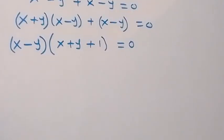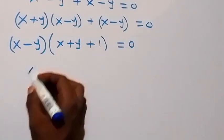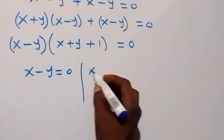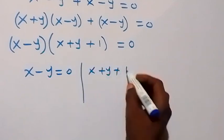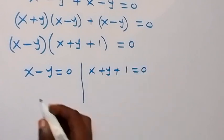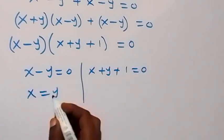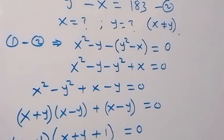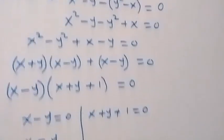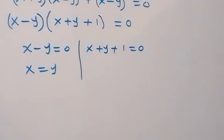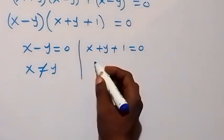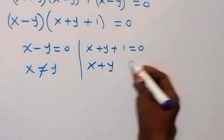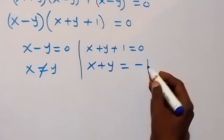From here we are going to have two cases. The first case: x minus y equals to 0, or we have x plus y plus 1 equals to 0. From the first case, x equals to y. But we established that x is not equal to y, so we can conclude that x will not equal y here. Therefore, taking 1 to the other side, x plus y equals to minus 1.